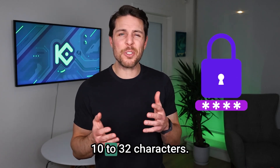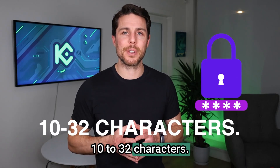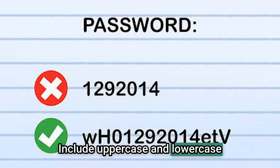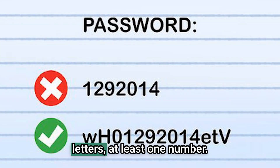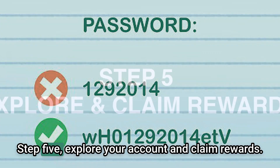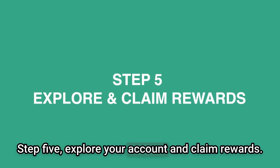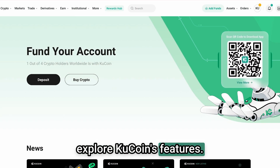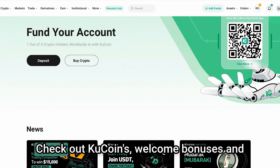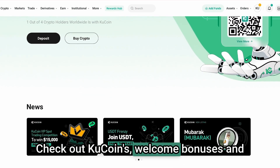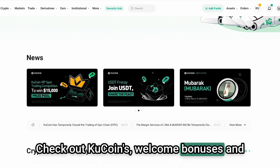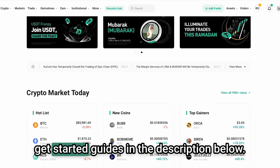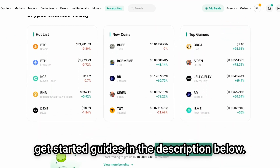Your password should be 10 to 32 characters and include uppercase and lowercase letters, plus at least one number. Step five: explore your account and claim rewards. You're now signed up and can explore KuCoin's features. Check out KuCoin's welcome bonuses and getting-started guides in the description below.